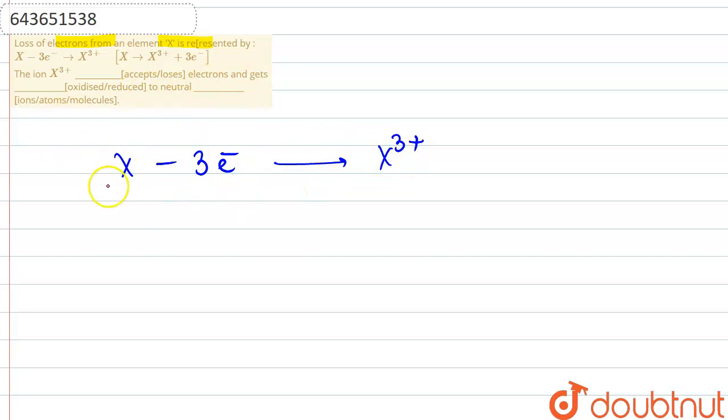This can also be written this way: if we take these 3 electrons to the other side, X3+ plus 3 electrons.